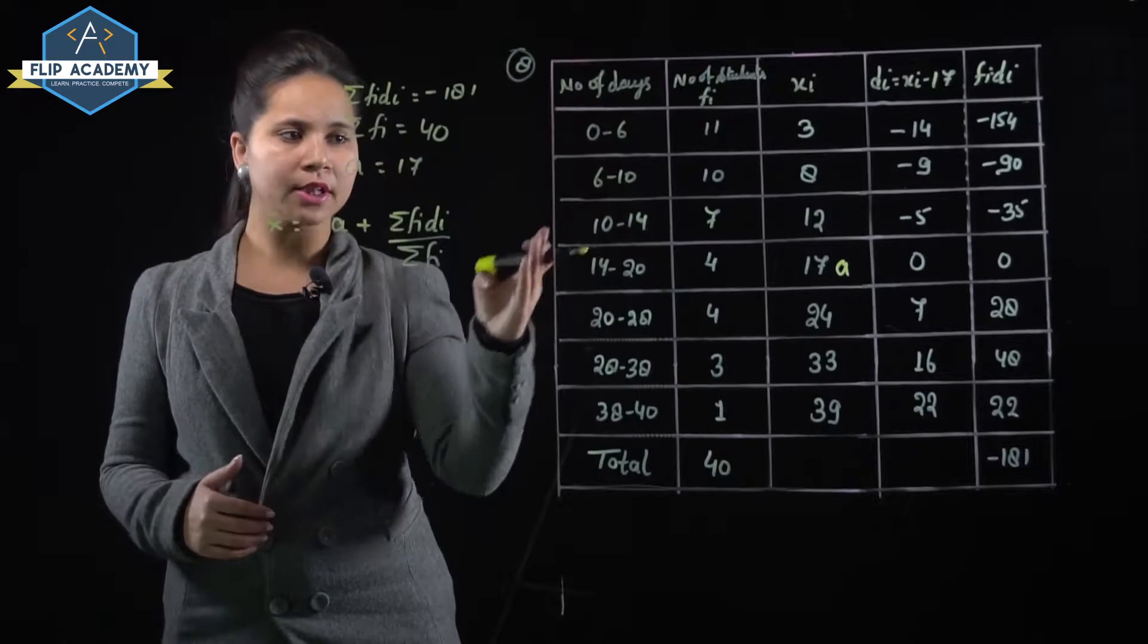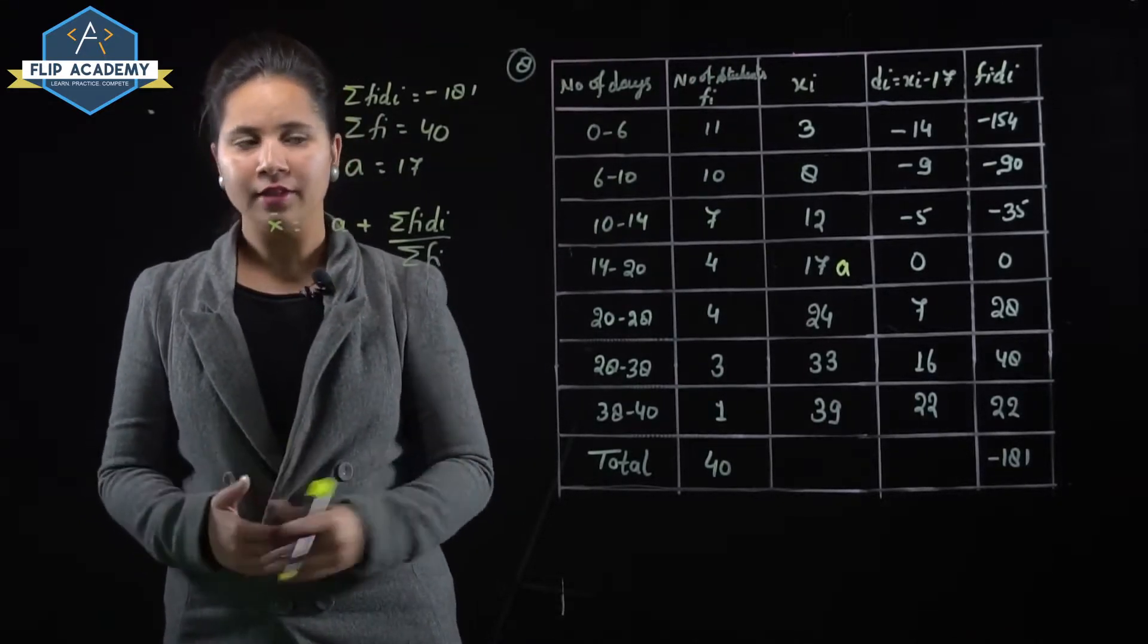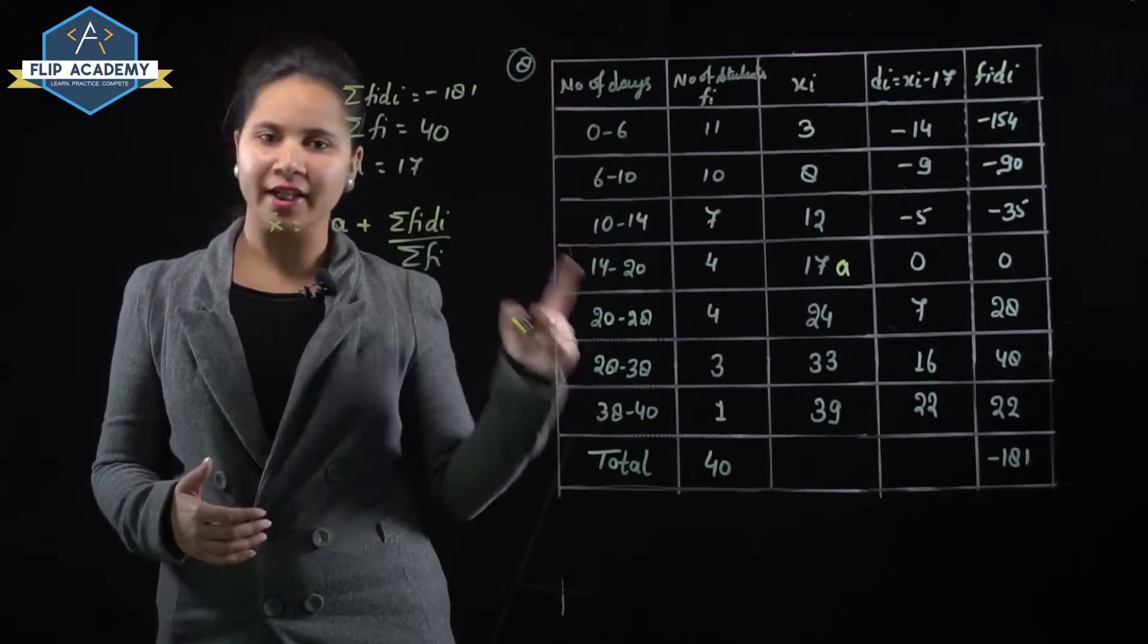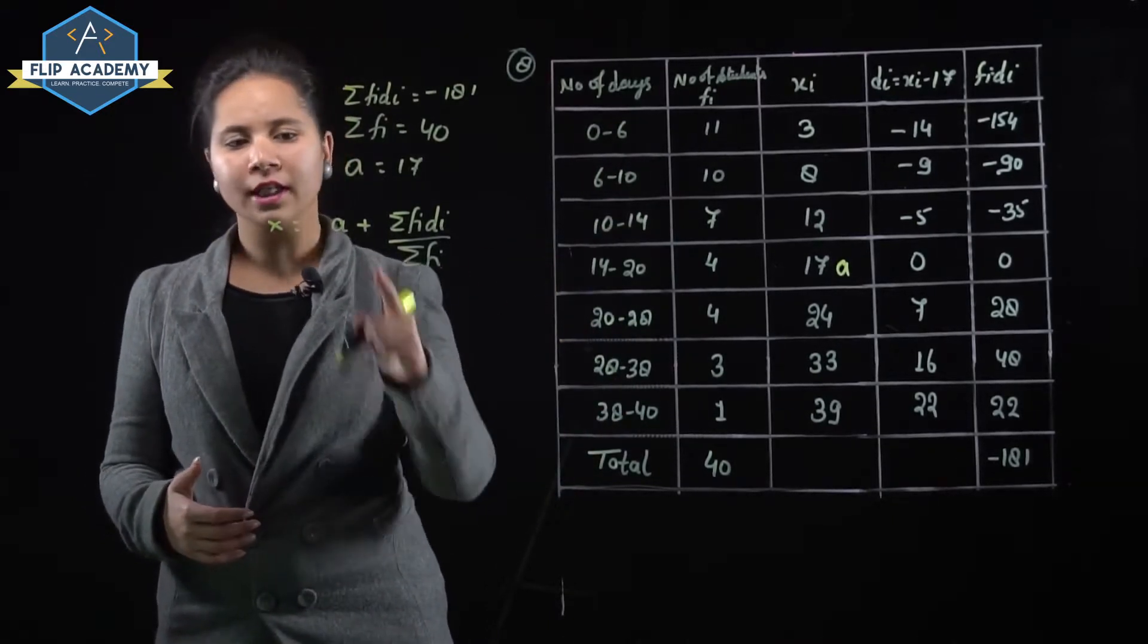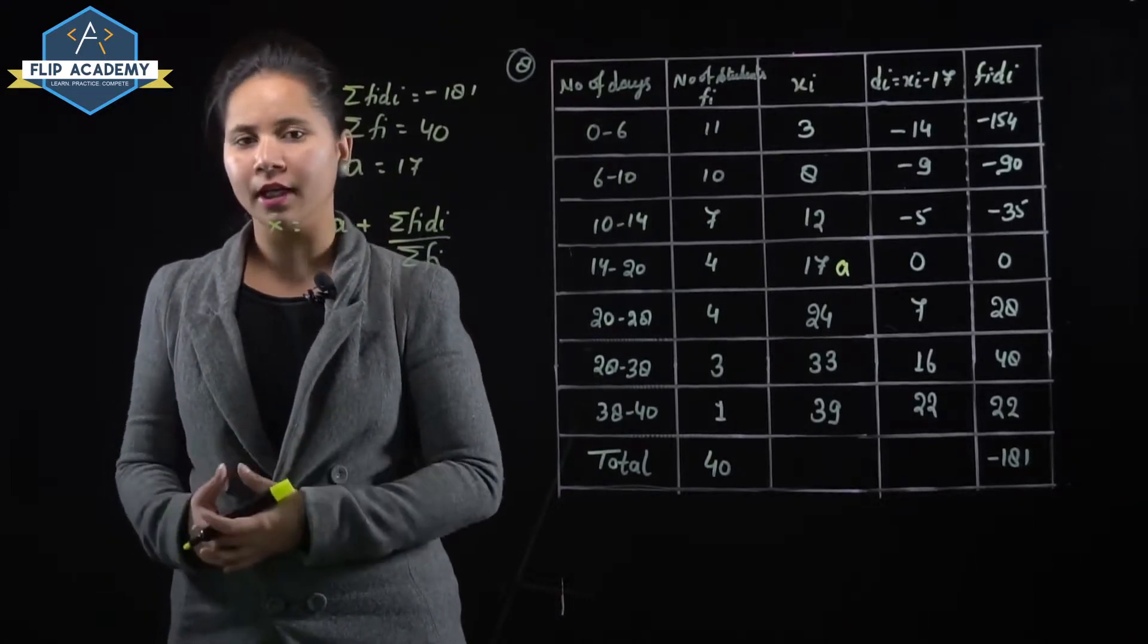Why did we use this formula? Because the differences between class intervals are unequal. That's why class marks are variable. When class marks vary, we apply the method: mean equals a plus sigma fi di upon sigma fi.